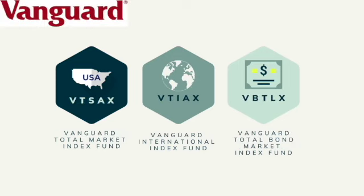Here are the Vanguard index funds. VTSAX, VTIAX, and VBTLX are your ticker symbols if you want to look those up and set up a portfolio like this. This is one example of how to build a three-fund portfolio.